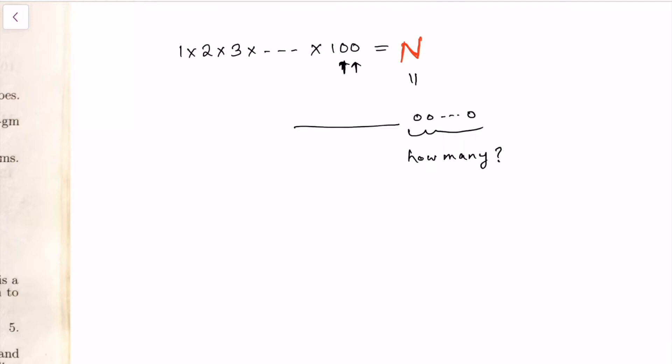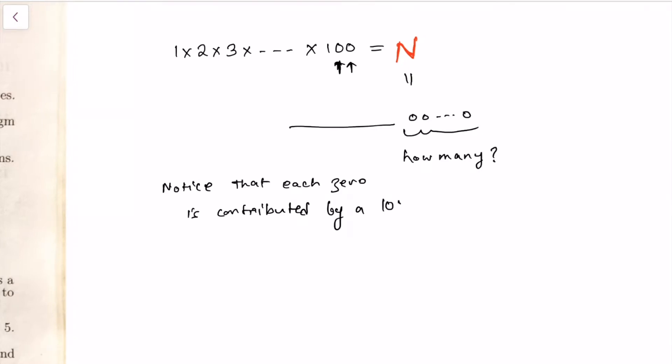Now to solve this problem, you have to notice that each zero is contributed by a ten. What do I mean by that? Well, what I mean is that if you do the prime factorization of this number, this huge number, then there will be...